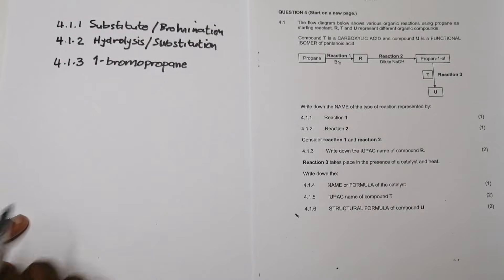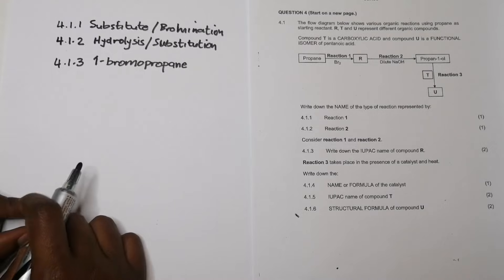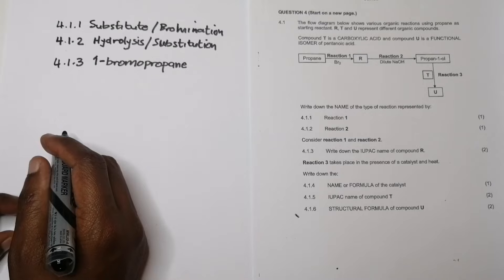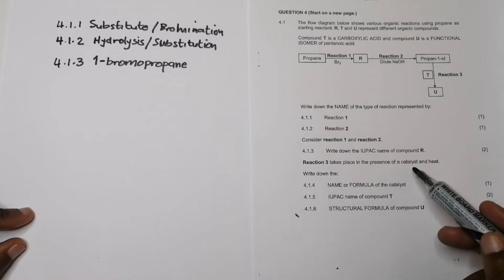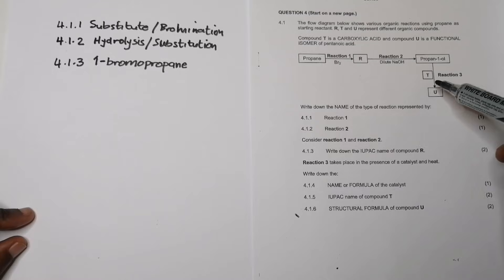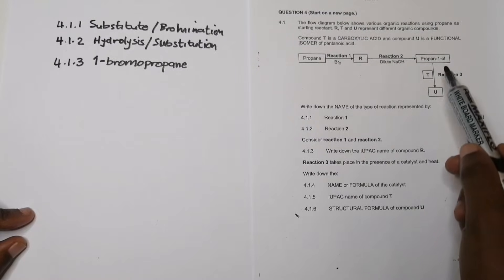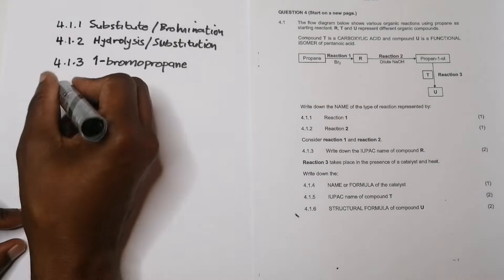Keep in mind that Markovnikov's rule is only applicable when reacting alkenes, and only where there is hydrogen and something else. Reaction three takes place in the presence of a catalyst and heat — and since U is a functional isomer that is an ester, reaction three must be esterification.